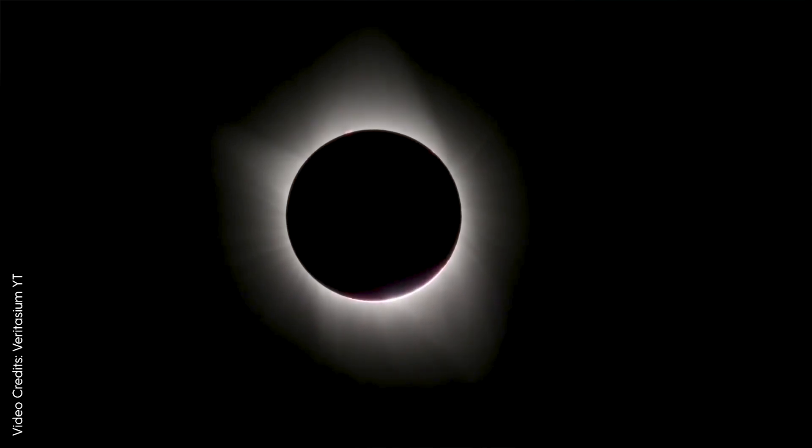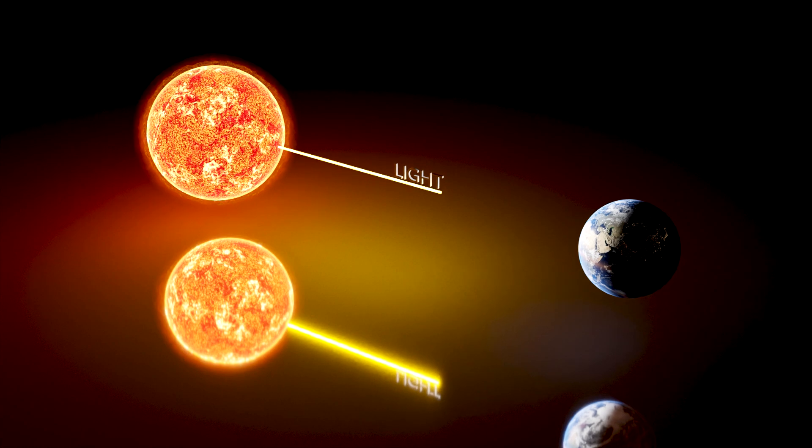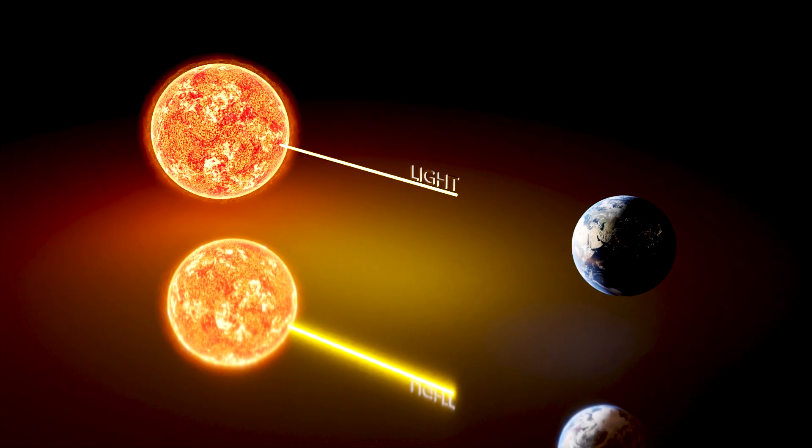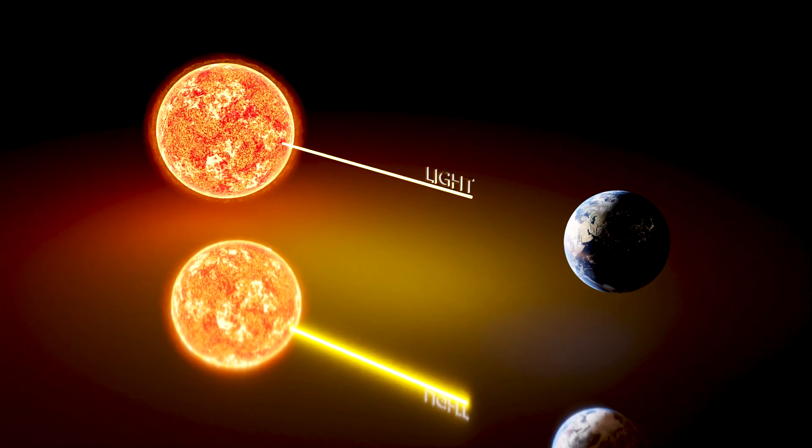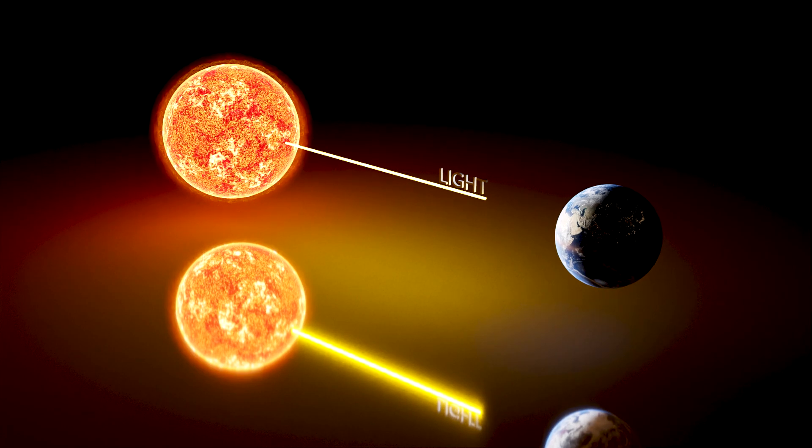However, the actual sizes are quite different. To put things into perspective, light, the fastest thing known to humanity, takes more than 8 minutes to travel from the sun to the Earth.